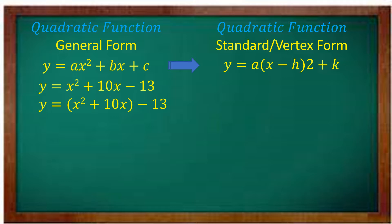You have to add a constant there because the constant is missing — plus blank. So it is the quantity of x squared plus 10x plus blank, minus 13. What should be added in that blank? You get the half of the middle term, which is 10. So what's the half of that? It's 5.